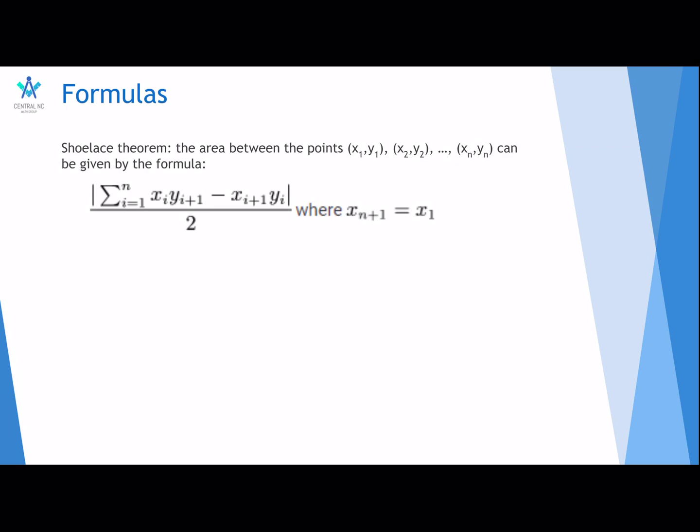So here are some formulas. This is the Shoelace theorem. More explanation of the name later. So, the area between these, when they're in order, the points x1, y1, x2, y2, all the way to xn and yn,